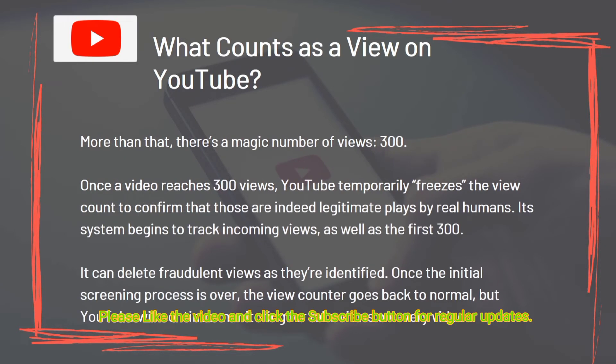There's also a magic number of views: 300. Once a video reaches 300 views, YouTube temporarily freezes the view count to confirm those are indeed legitimate plays by real humans. Its system begins to track incoming views as well as the first 300, and can delete fraudulent views as they're identified. Once the initial screening process is over, the view counter goes back to normal, but YouTube will continue monitoring for fake views on every video.